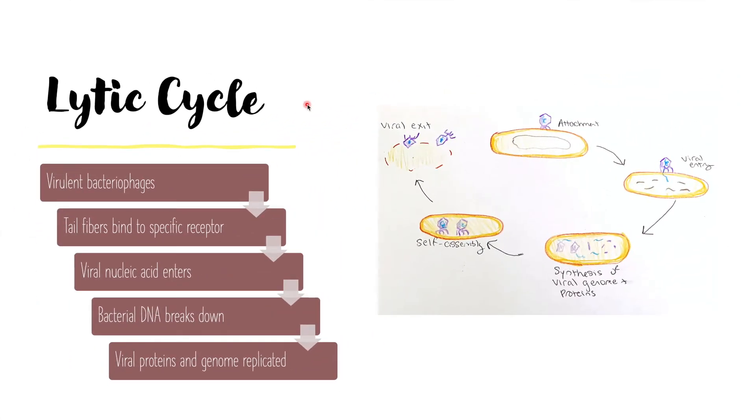Bacteriophages can be either virulent or temperate. If they are virulent, they utilize the lytic cycle. If they are temperate, they reproduce via the lysogenic cycle.